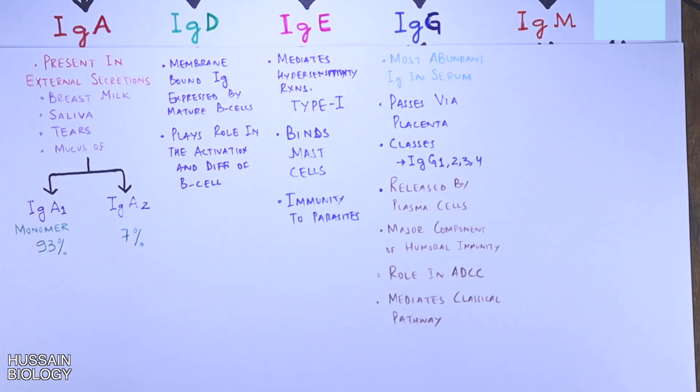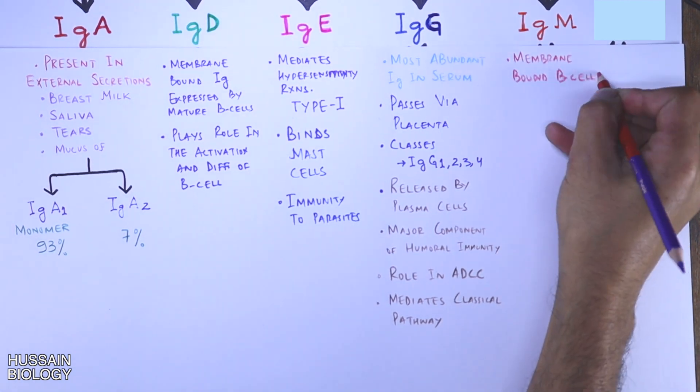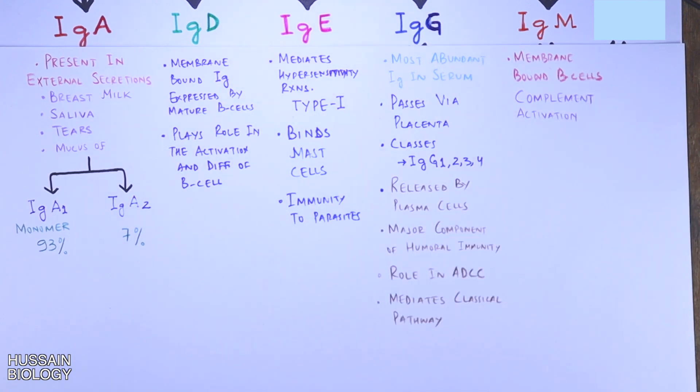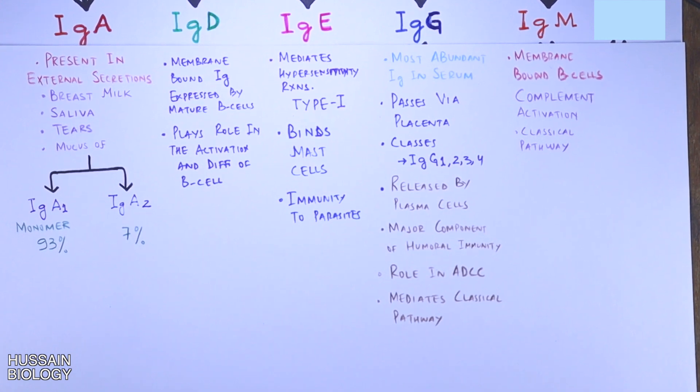Then finally we have the immunoglobulin M which is present in membrane-bound B cells and activates complement system, that is the classical pathway. So this is the brief overview of their functions and the structures of immunoglobulins.